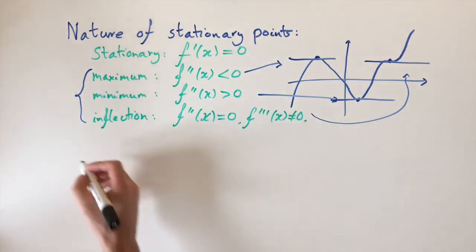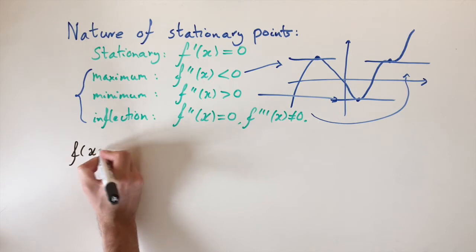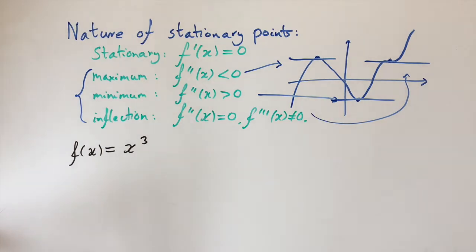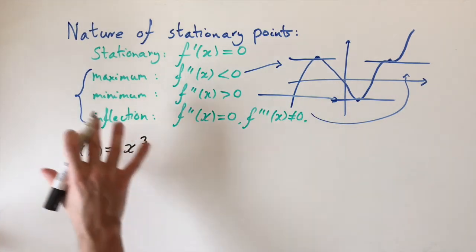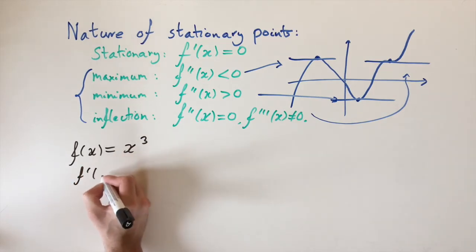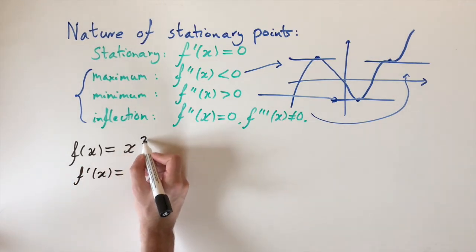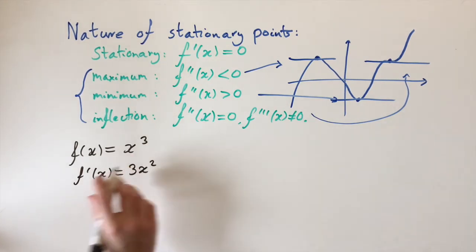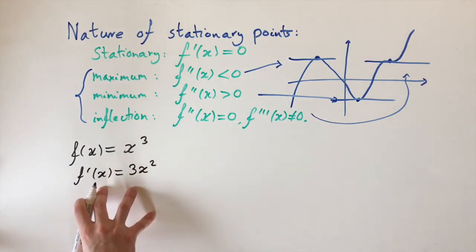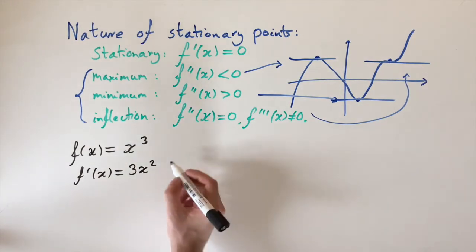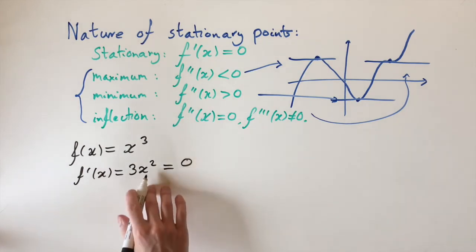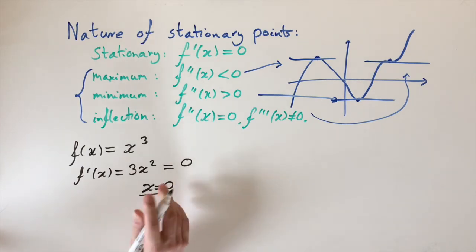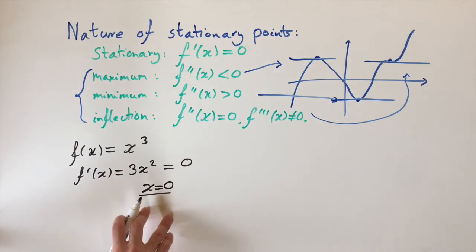This time we're going to look at a slightly simpler example — f(x) = x³. We want to find the turning points and the nature of these turning points. The method is always the same: first find the derivative of f. So f′(x) — bring the power down and reduce the power by 1 — this gives us 3x². To find its turning points, we set this equal to zero, and the only solution is when x = 0. So this is the only turning point.